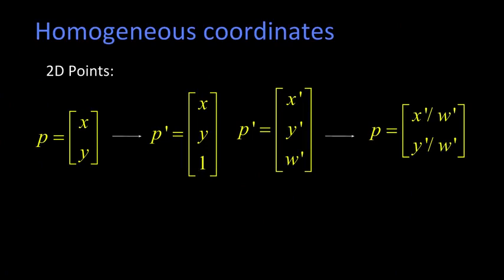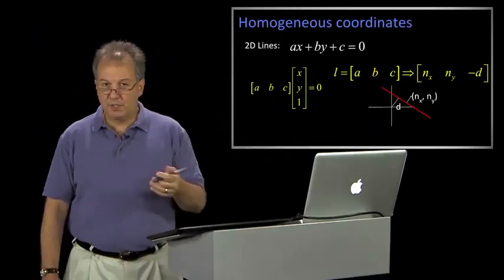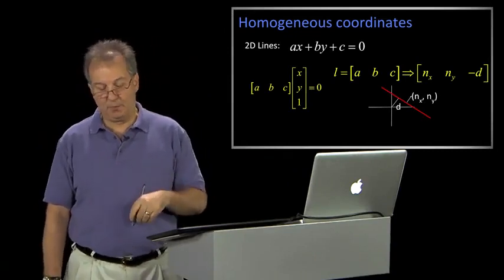We already know about going between homogeneous coordinates and regular coordinates. In 2D, for example, we take a 2D point (x,y) and make it homogeneous by adding a 1 to it. That last coordinate can be thought of as the thing that tells you about the scale. When you go from homogeneous coordinates to regular, you just divide by that scale value. But homogeneous coordinates actually allow us to do a lot more. In particular, they're going to give us a natural way of thinking about lines.